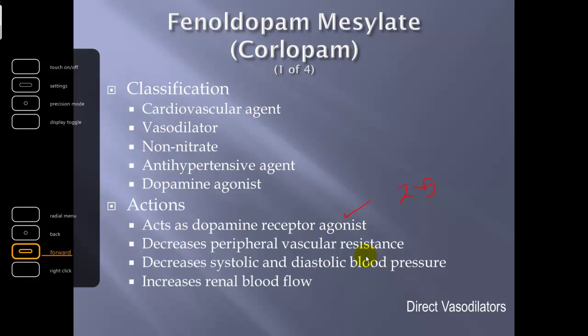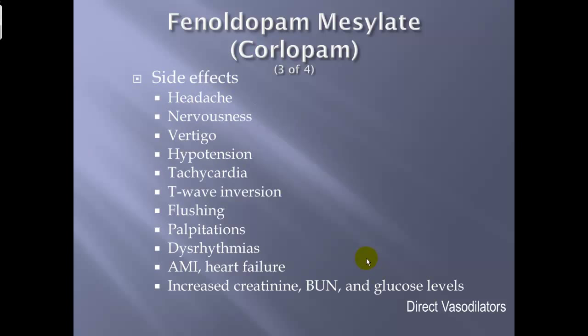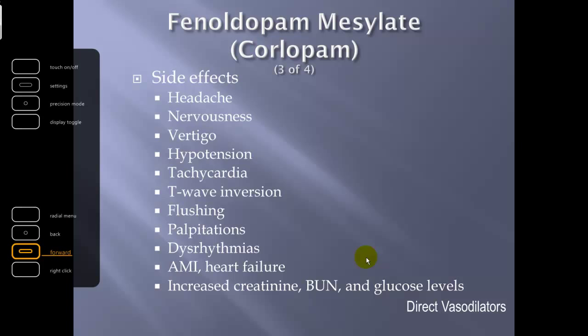Indications: severe hypertension. Contraindications: known hypersensitivity; do not use with beta blockers. Side effects: headache, nervousness, vertigo, hypotension, tachycardia, T-wave inversion (can create mild ischemia), flushing, palpitations, dysrhythmias, acute myocardial infarction, heart failure, and increased creatinine, BUN, and glucose levels — the latter due to stimulation of the kidneys.